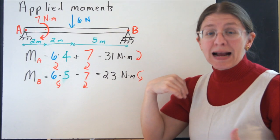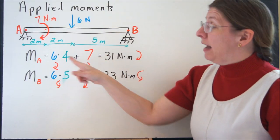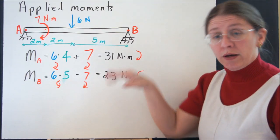This one gets added in as a tendency to turn at A. I can consider that a couple acts anywhere I want to, so I can consider that it acts at A. And I can add these up, and I get 31 clockwise.